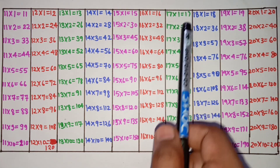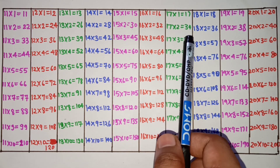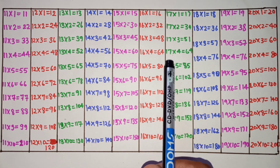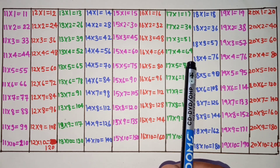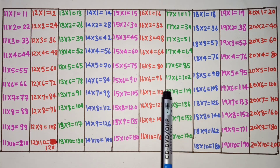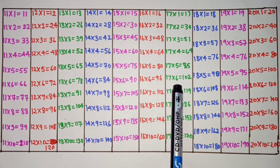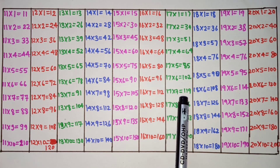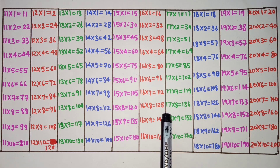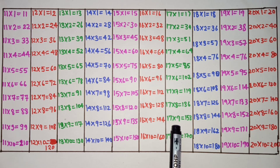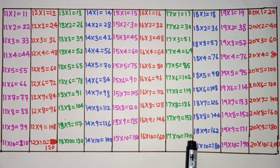17×1 is 17, 17×2 is 34, 17×3 is 51, 17×4 is 68, 17×5 is 85, 17×6 is 102, 17×7 is 119, 17×8 is 136, 17×9 is 153, 17×10 is 170.